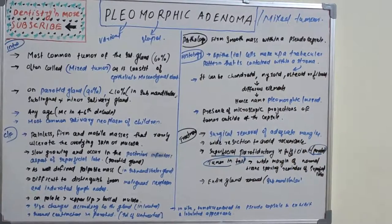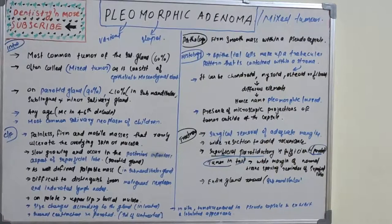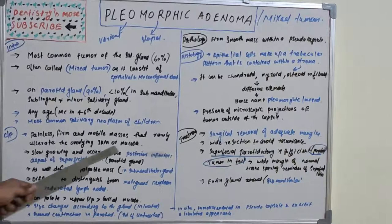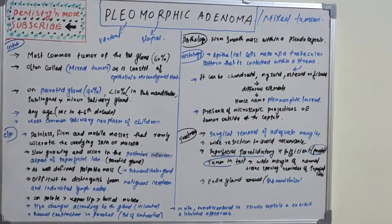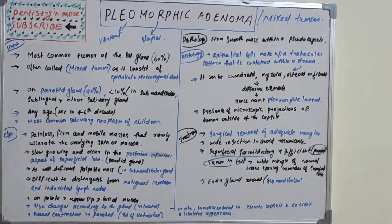Clinically, pleomorphic adenoma appears as painless, firm, and mobile masses that rarely ulcerate the overlying skin or mucosa. These slow-growing masses occur in the posterior inferior aspect of the superficial lobe of the parotid gland. It primarily affects the superficial lobe, specifically the posterior and inferior aspect.